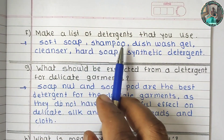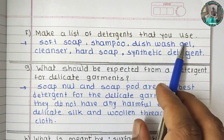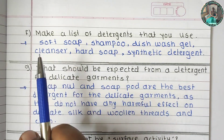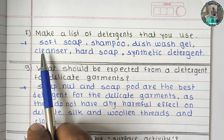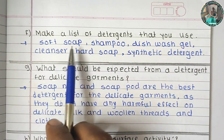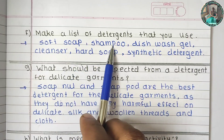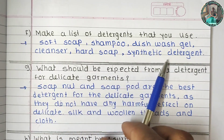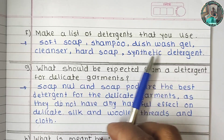Make a list of detergents that we use: soft soap, shampoo, dish wash gel, cleanser, hard soap, synthetic detergent.